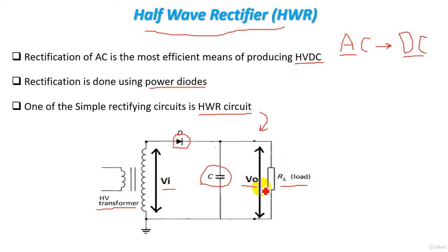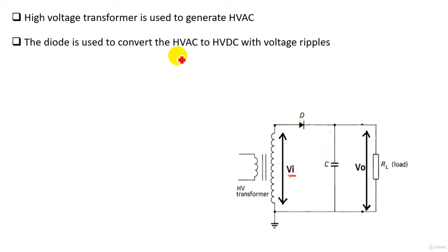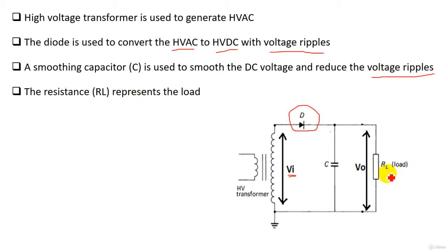Let's see the function of each component. The high voltage transformer steps up the voltage to obtain high voltage AC, which is the input to our rectification circuit. The diode converts high voltage AC into high voltage DC with voltage ripples. The capacitor is used to smooth the DC voltage and reduce the voltage ripples. The resistance R_L represents our load or insulator.